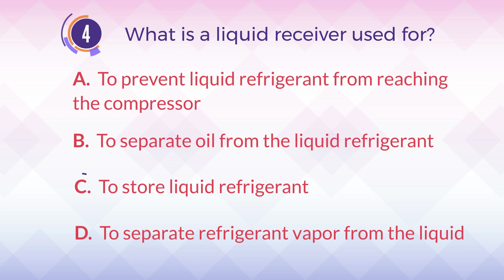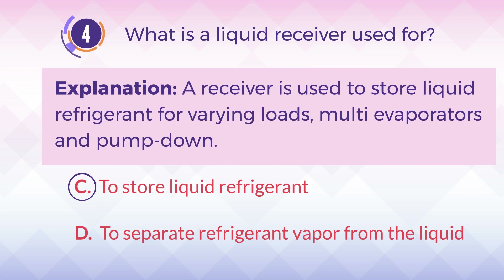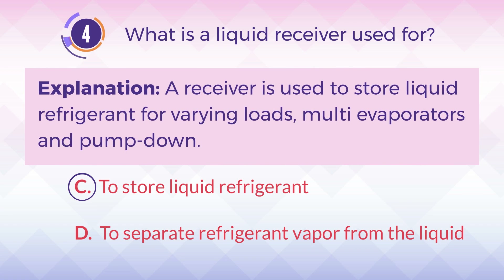The answer is C. To store liquid refrigerant. Explanation: A receiver is used to store liquid refrigerant for varying loads, multi-evaporators, and pump-down.